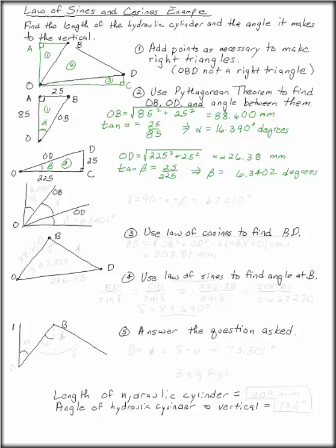That comes in handy when we want to find the third angle, gamma. This is the actual angle between OB and OD. In our right triangle at O, we have alpha, beta, and gamma. So,